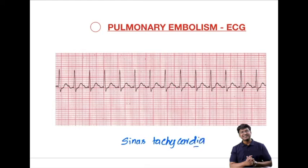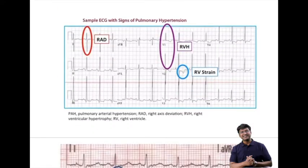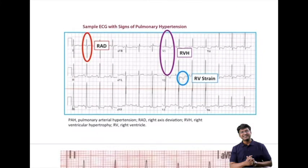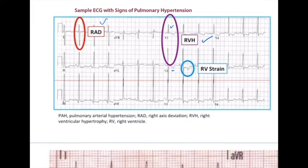What are the other ECG changes in patients with pulmonary embolism? There is right ventricular hypertrophy, so you will have the presence of a dominant R wave with asymmetrical T wave inversion in V1 and V2. Right axis deviation is another important ECG finding in pulmonary embolism.